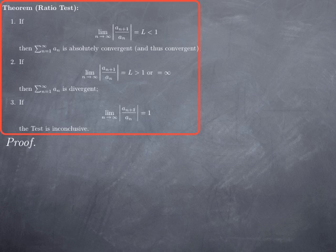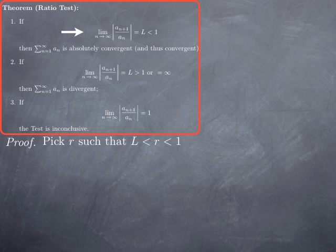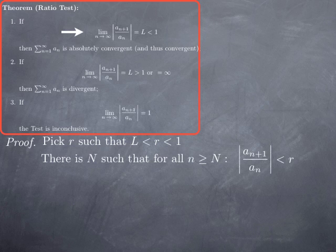Now let's turn to the proof. The basic idea is to look at the asymptotic behavior of this ratio and use it to compare with a geometric series. Starting with the case where the limit L is less than 1: I can find a number r strictly between L and 1. Because the sequence |a_{n+1}/a_n| has limit L, for indices large enough this ratio is less than r, since it will be as close as I want to L, in particular less than r.